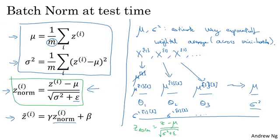And then you would compute z tilde on your one test example using that z_norm that we just computed on the left and using the beta and gamma parameters that you have learned during your neural network training process.